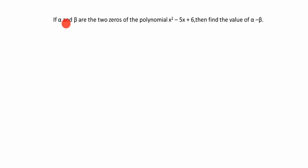Hi friends, welcome to my channel Excellent Ideas in Education. Today we are going to learn about a quadratic polynomial problem. If alpha and beta are the two zeros of the polynomial x squared minus 5x plus 6, then find the value of alpha minus beta.